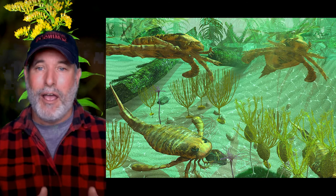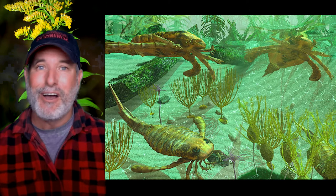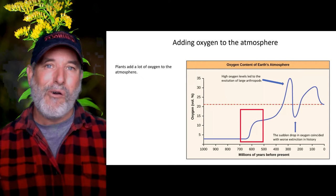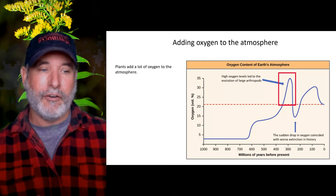The Cambrian explosion — the rapid diversification of animal life — occurred about 542 million years ago. I find it very interesting that we see this rapid diversification of animals alongside higher levels of oxygen. Then, going back to around 400 million years ago, oxygen levels begin to ramp up again.